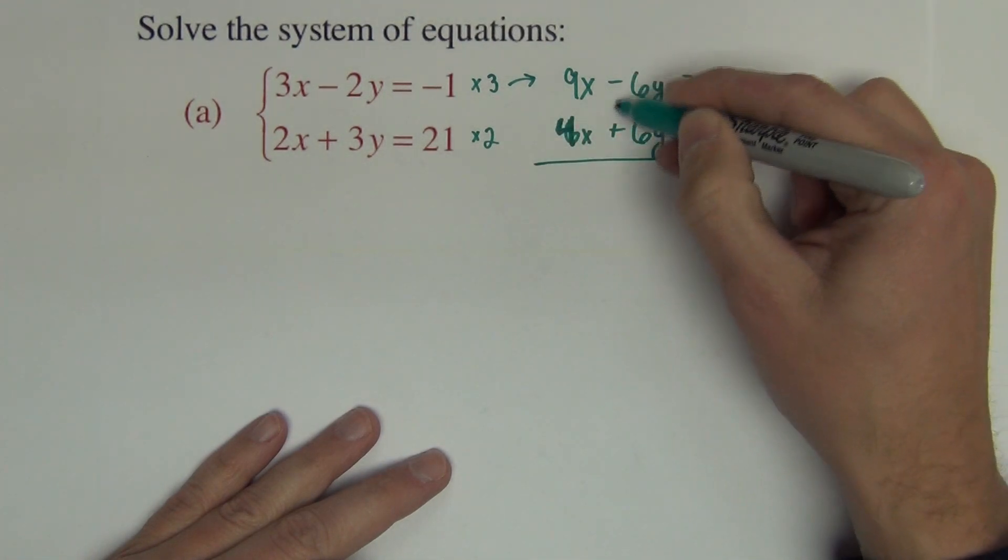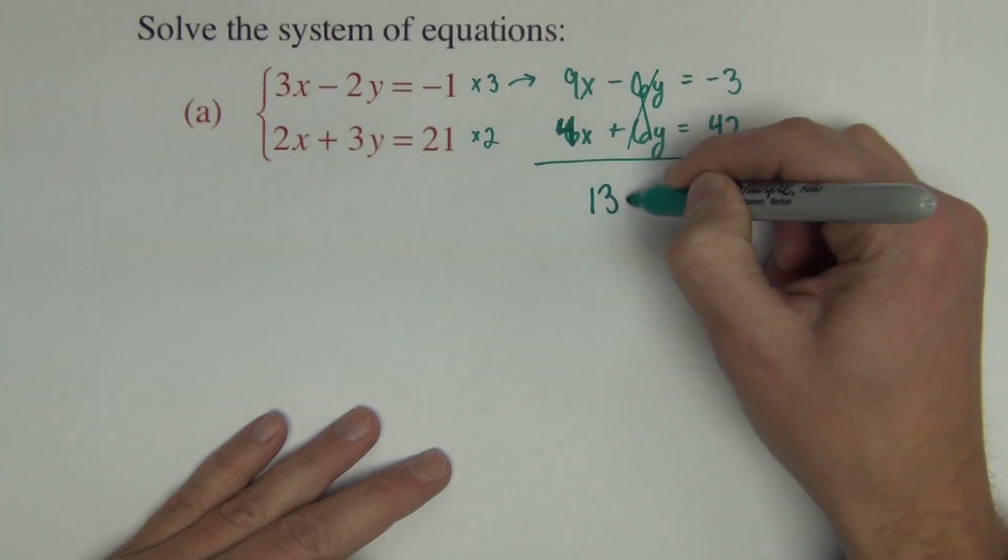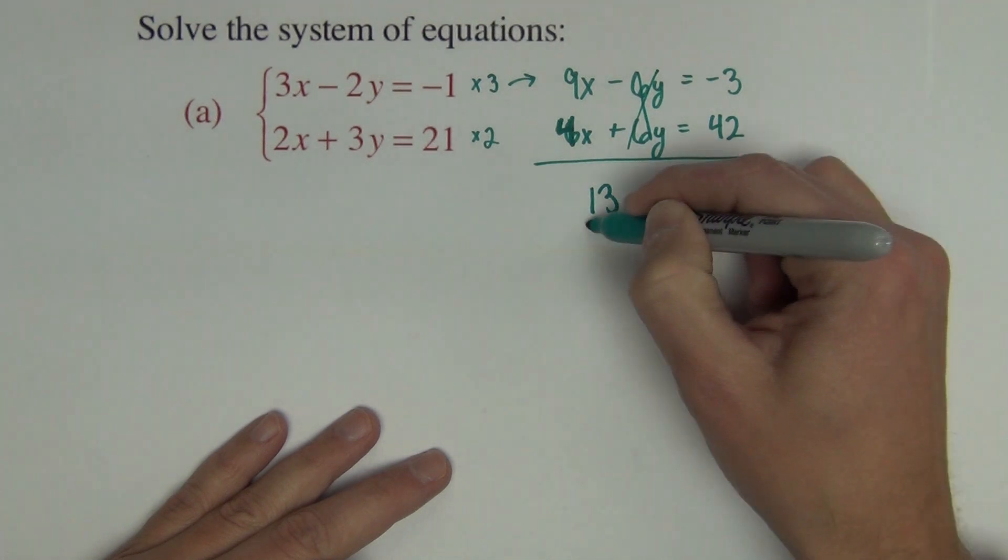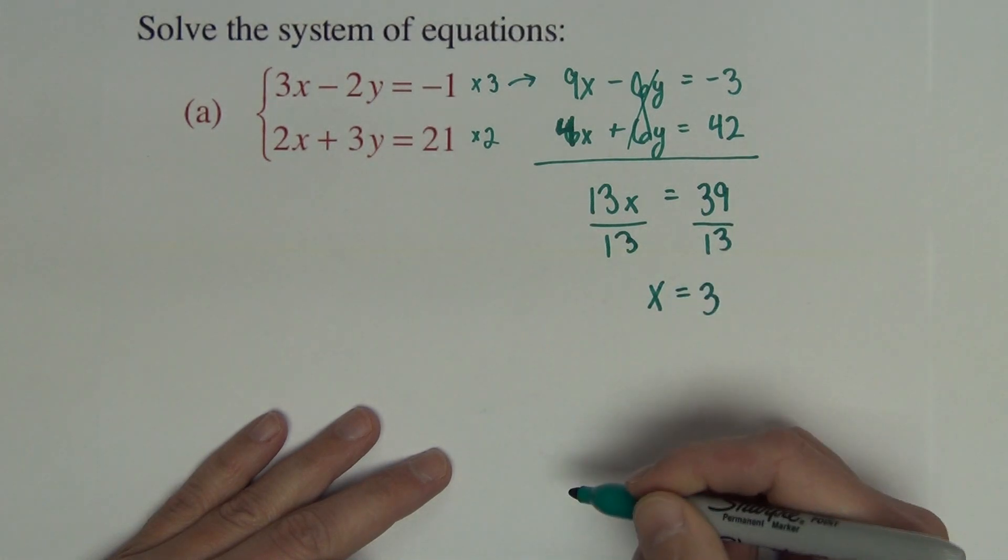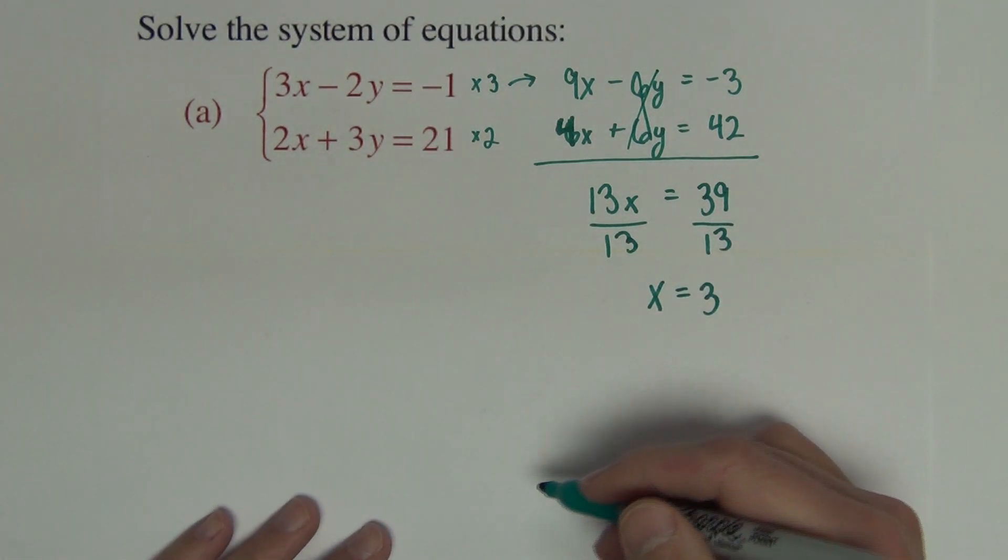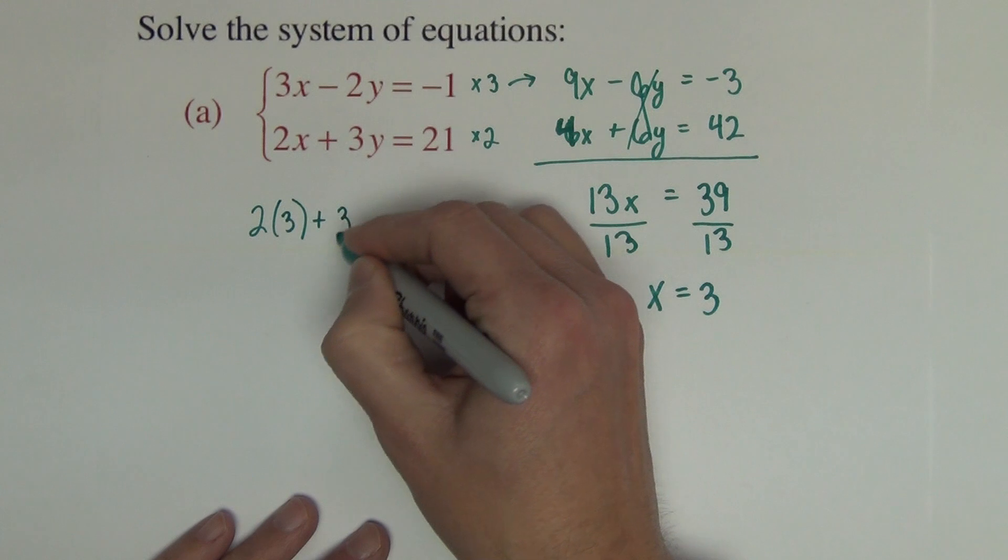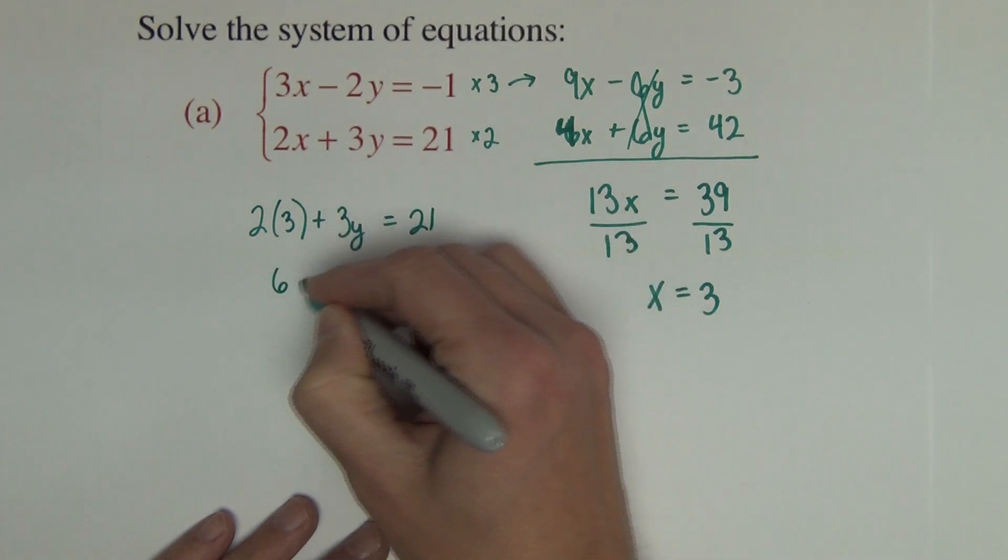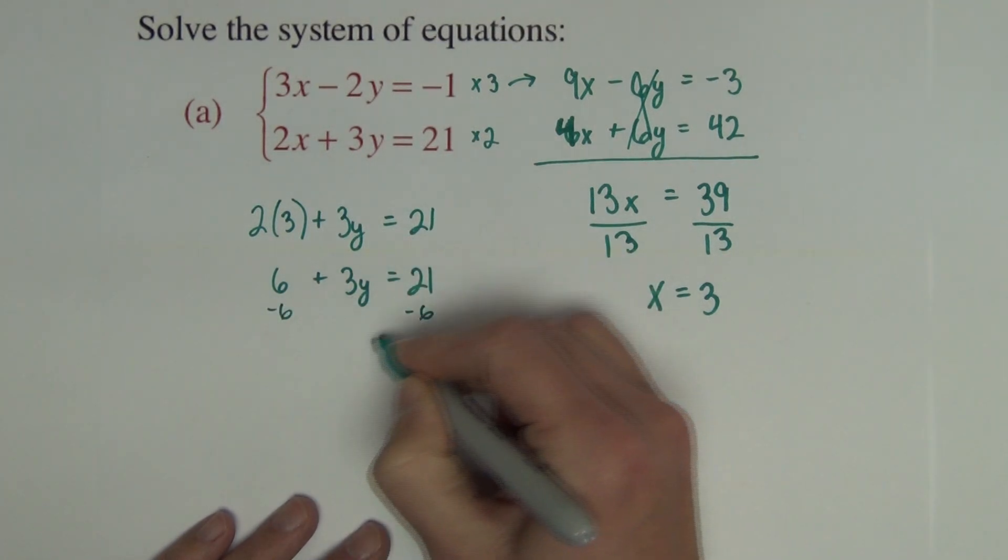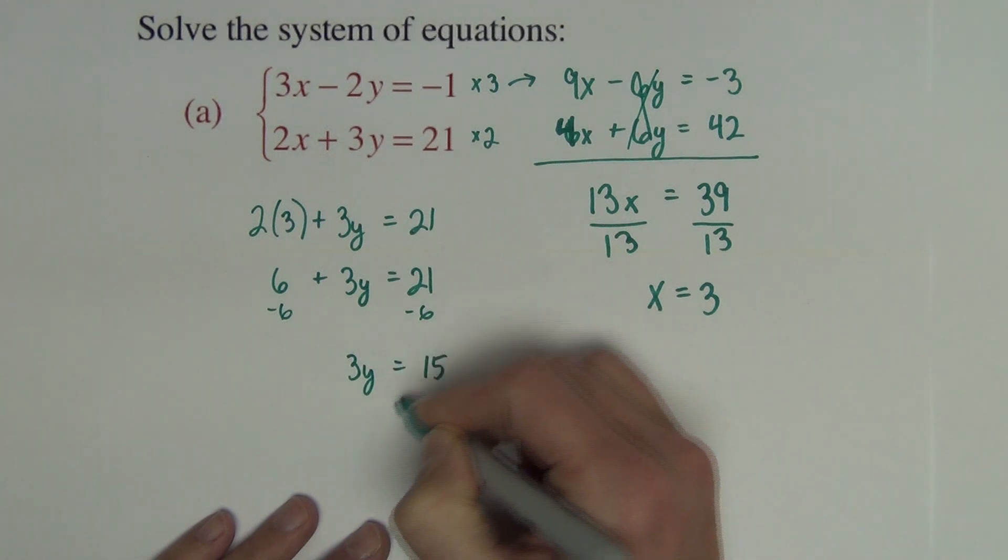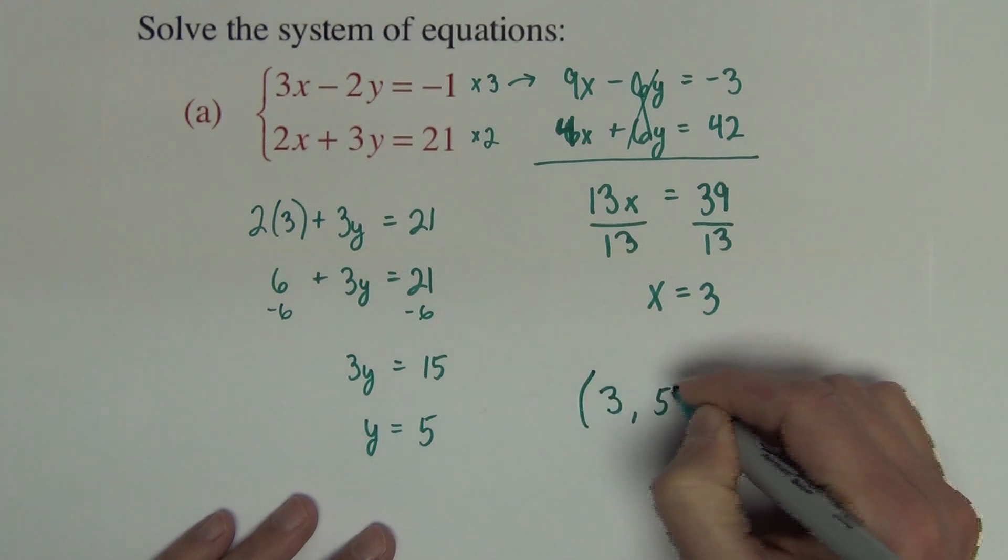The idea is that I want these y's, I was making these y's add to 0. So I end up with 13x equals 39, dividing by 13, we get x equals 3. Now I need to find the y that goes with this x value of 3. So I'm just going to use this bottom equation, substitute 3 in for x. So that's 6 plus 3y equals 21. Subtract the 6, I get 3y equals 15. Divide by 3, we get y equals 5. So our solution is (3, 5).